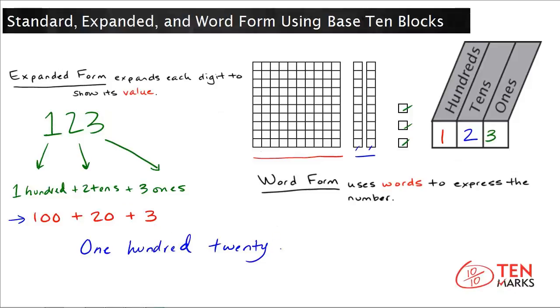you have three ones, so you write three. The word form is one hundred twenty-three.